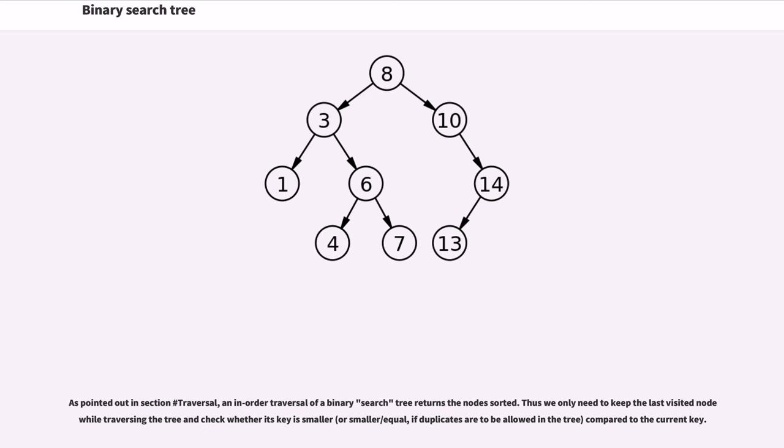As pointed out in section traversal, an in-order traversal of a binary search tree returns the node sorted. Thus we only need to keep the last visited node while traversing the tree and check whether its key is smaller, or smaller/equal, if duplicates are to be allowed in the tree, compared to the current key.